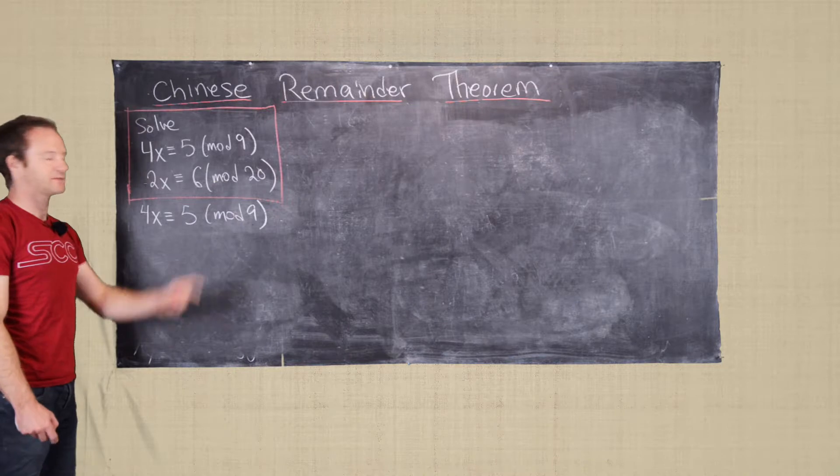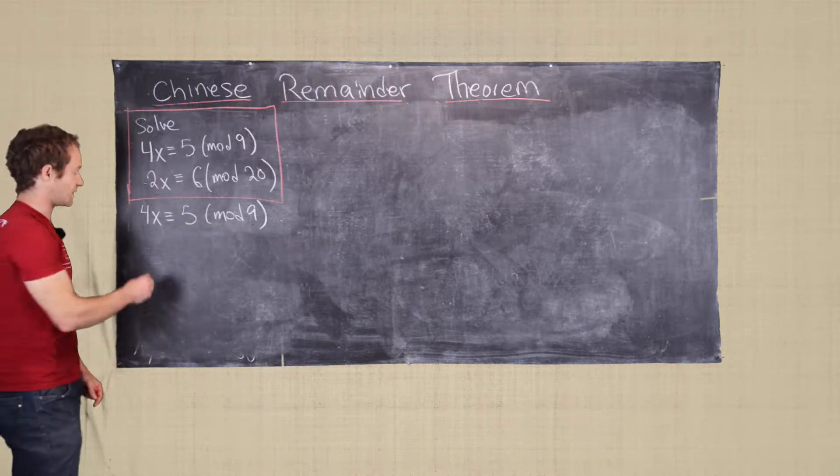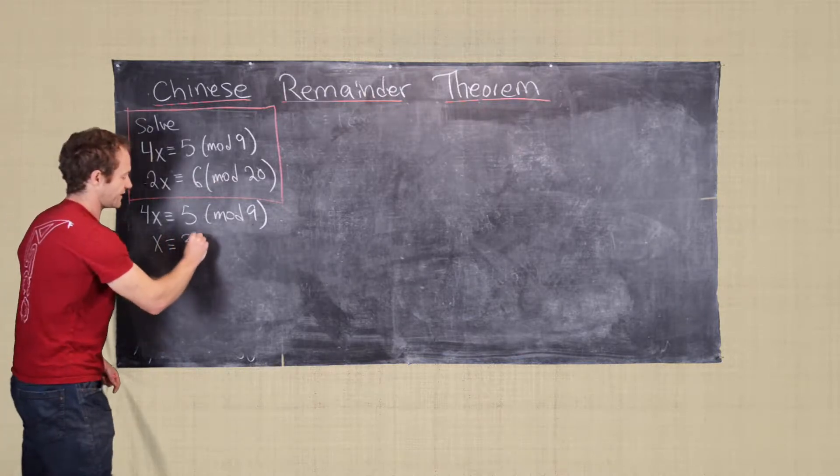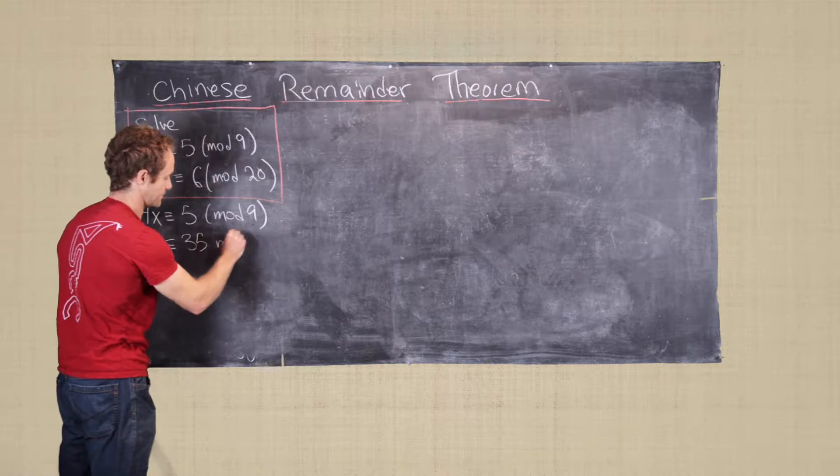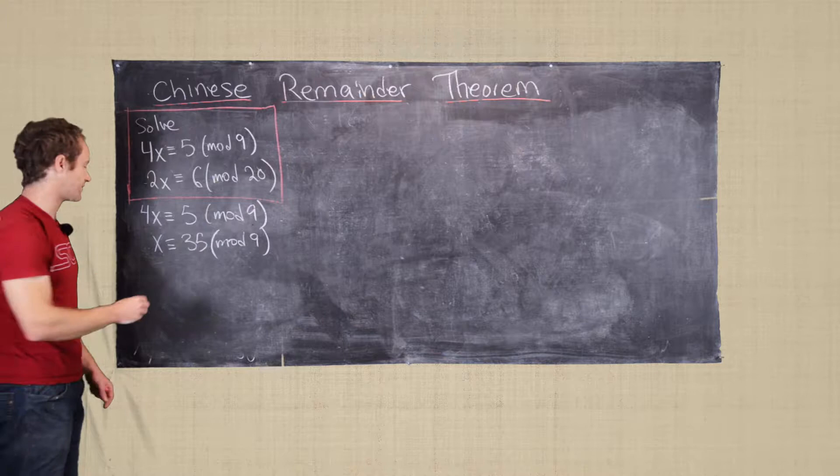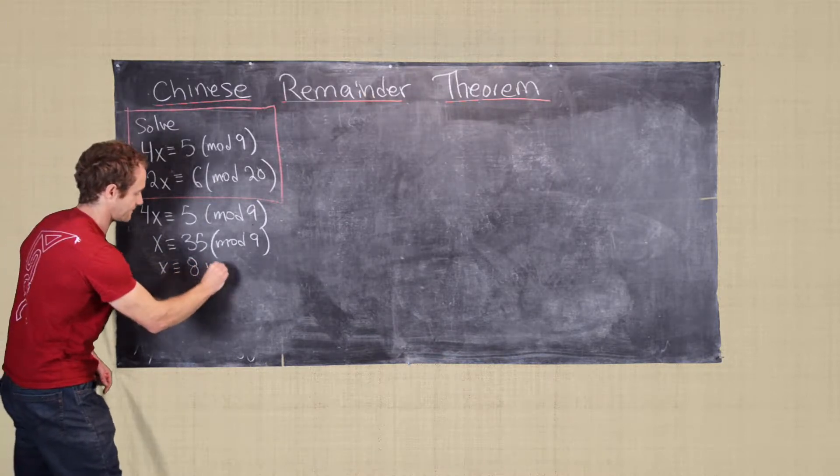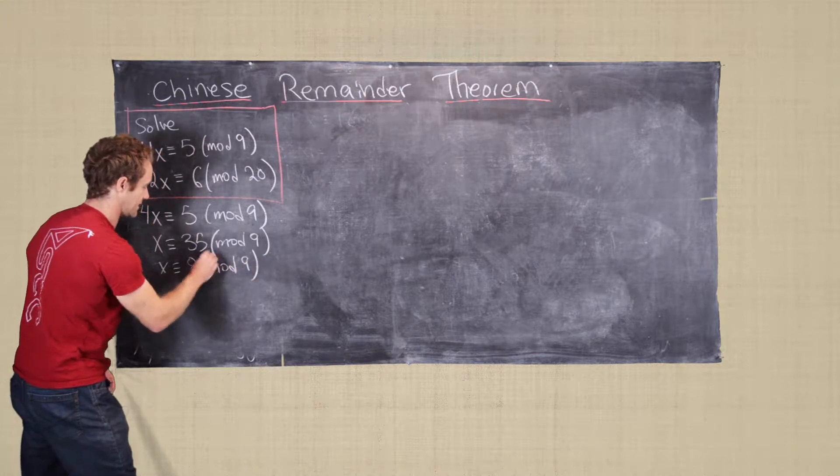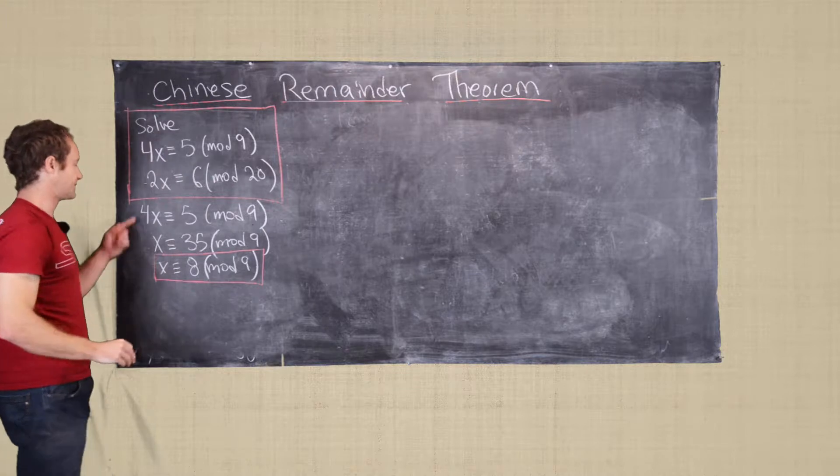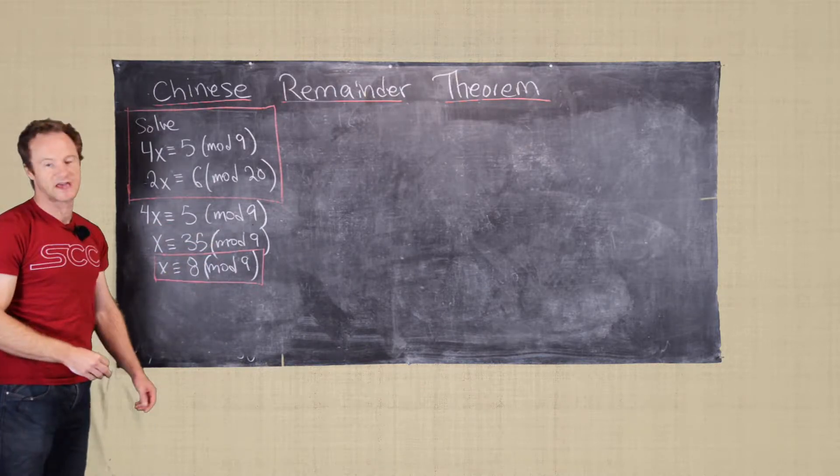In other words, we can multiply both sides of this linear congruence by 7, and we'll be able to solve this. So that means x is congruent to 35 mod 9. Now 35 is 1 less than 36, so we can say that x is congruent to 8 mod 9. So we've simplified 4x is congruent to 5 mod 9 down to x is congruent to 8 mod 9.